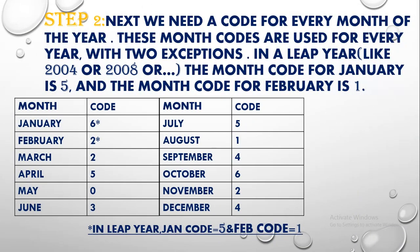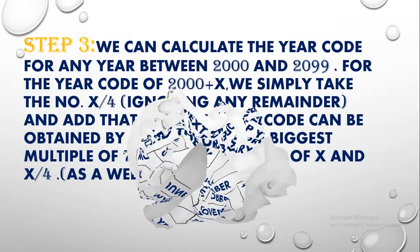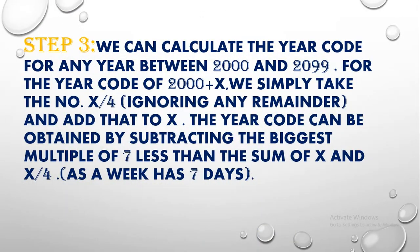Step two: we also need a code for every month of the year, which are listed below in the tables. Note that in a leap year, the code of January and February are reduced by one.